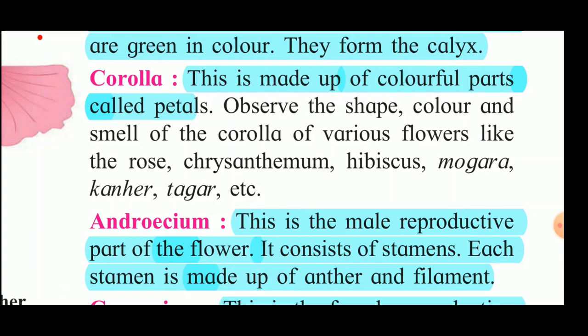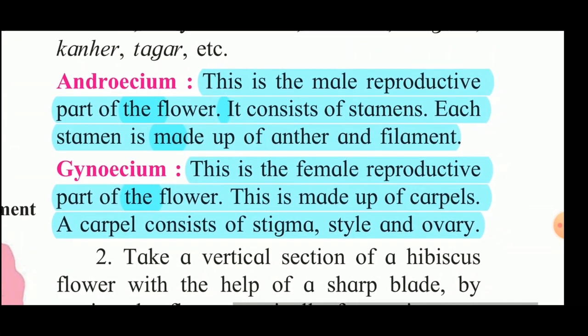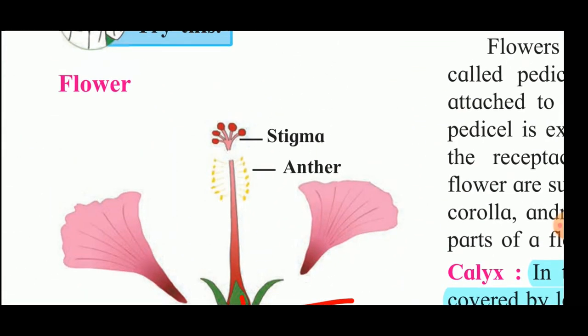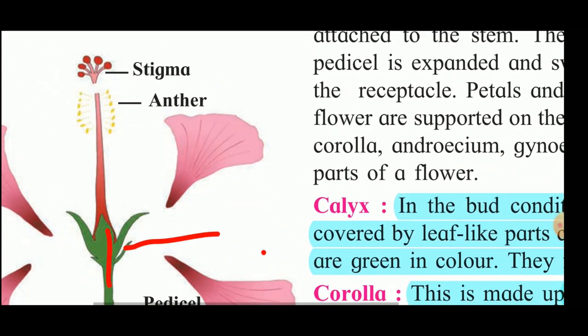The next part of the flower is the androecium. This is the male reproductive part of the flower. It consists of stamens, and each stamen is made up of anther and filament. Here you can see the stamen - the yellow part is the androecium, which is made up of the stamen and the filament.